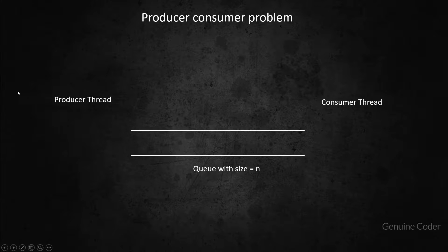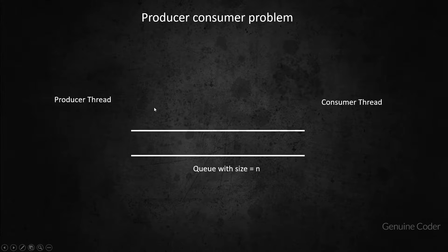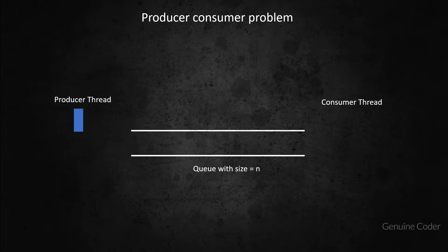In this problem, you have two minimum threads. One is the producer thread and one is the consumer thread. Both the producer thread and the consumer thread are running parallelly. What the producer thread will do is create some sort of data and put it inside a queue.